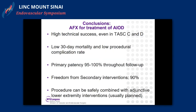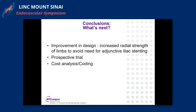In conclusion, there is high technical success for this aortic unibody device even in TASC-D lesions, with low 30-day mortality and low procedural complication rate. Primary patency is 95 to 100% throughout follow-up, freedom from secondary interventions is 90%, and it can be safely combined with adjunctive lower extremity interventions, usually planned. Next steps include improvement in device design to improve radial strength of the limbs to avoid need for adjunctive stenting. There will also be attention to cost and coding — a new code is anticipated in 2018 — and ultimately a prospective trial looking at a newly engineered device specifically for this indication.